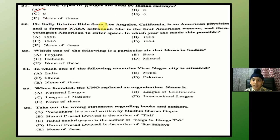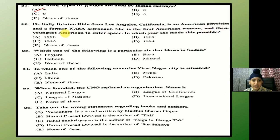Dr. Sally Kristin Ride from Los Angeles, California, is an American physicist and a former NASA astronaut. She is the first American woman and the youngest American to enter space. In which year did she make this possible? The answer is B — 1983.